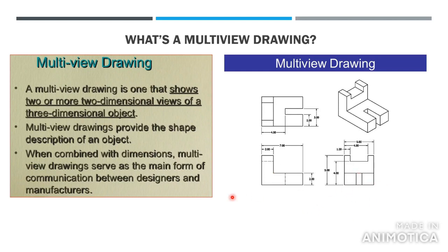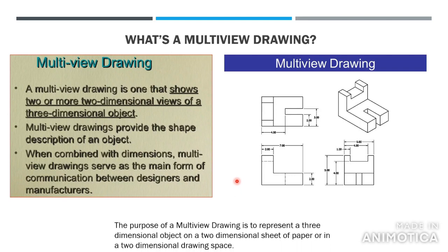Multi-view drawings provide the shape and description of an object. The main thing they are used for is to represent a three-dimensional object in two dimensions. So if you don't have the actual object in 3D, the two-dimensional drawings should give you enough information to make the 3D object.